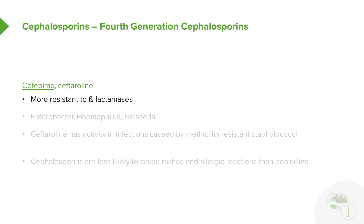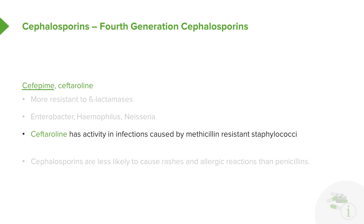The fourth generation cephalosporin prototypical agent is cefepime. These are more resistant to the beta-lactamases and are also active against Enterobacter, Haemophilus, and Neisseria. Ceftaroline has activity in infections caused by methicillin-resistant staphylococci, so we sometimes use it in that case.